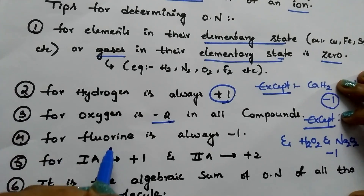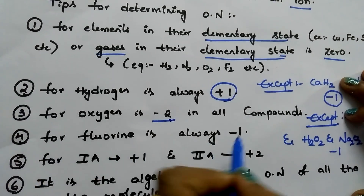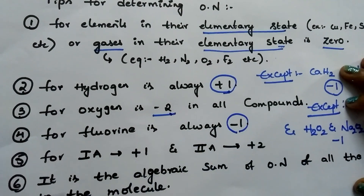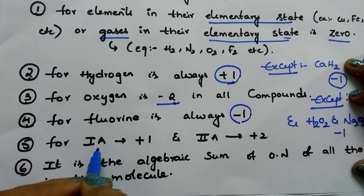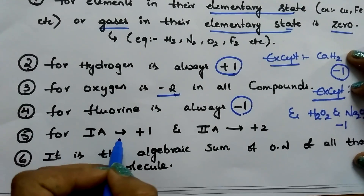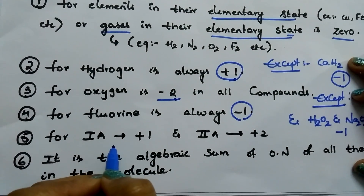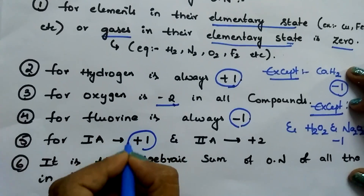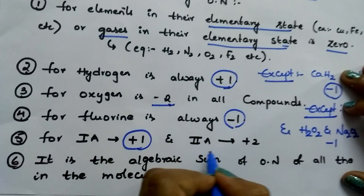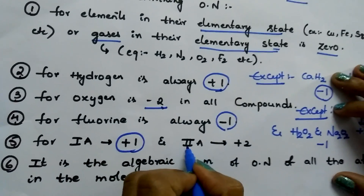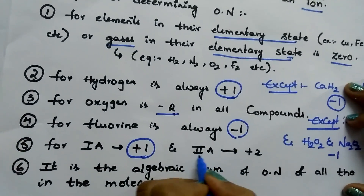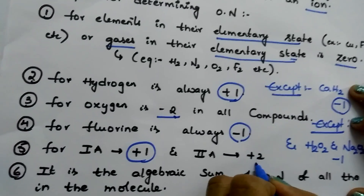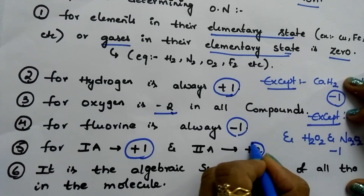Tip number 4. Fluorine oxidation number is always minus 1. Tip number 5. Group 1A elements, called alkali metals, have an oxidation number of plus 1. Alkaline earth metals, that is Group 2A elements, have an oxidation number of always plus 2.